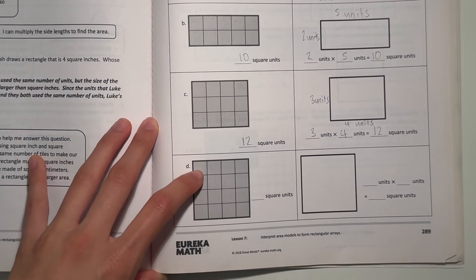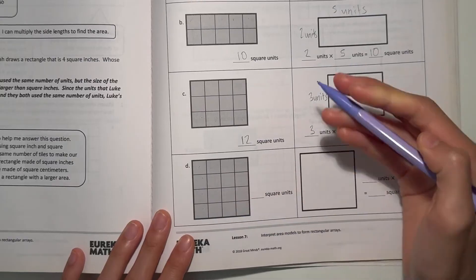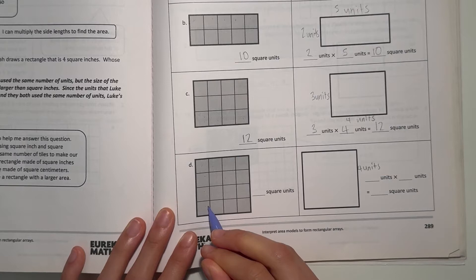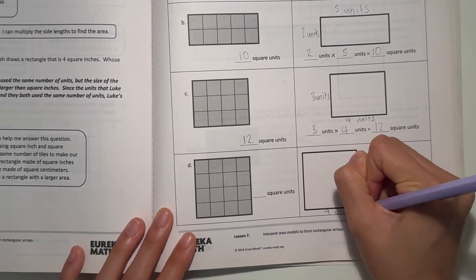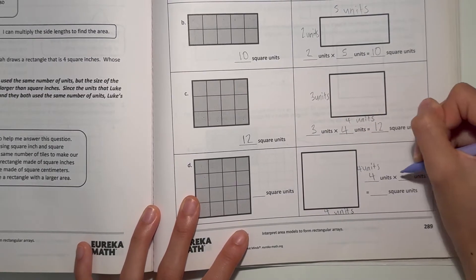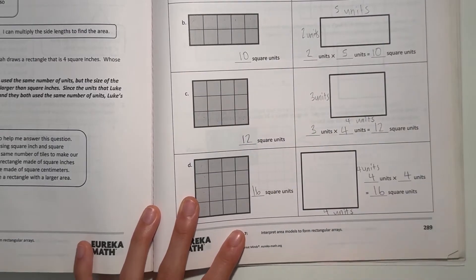Alright, and D. We have 1, 2, 3, 4 on this side, 4 units. On the other side, we also have 1, 2, 3, 4. So this is actually a square. 4 units times 4 units is 16 square units. So 16 is our area.